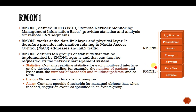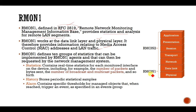RMON 1 is defined in RFC — Request for Comments. This is the Remote Network Monitoring Management Information Base, which provides statistics for LAN segments. RMON 1 works at the data link layer and physical layer. It therefore provides information related to the MAC layer and your LAN. The data stored by RMON 1 defines 10 groups that can be implemented by an RMON 1 agent and can then be requested by the network management system.